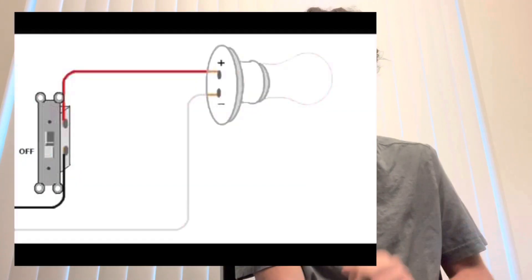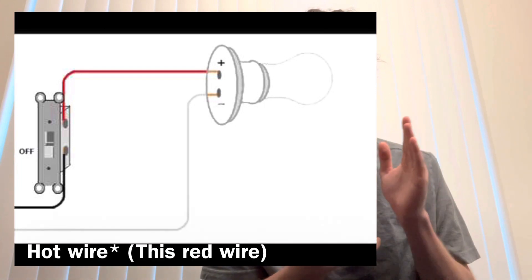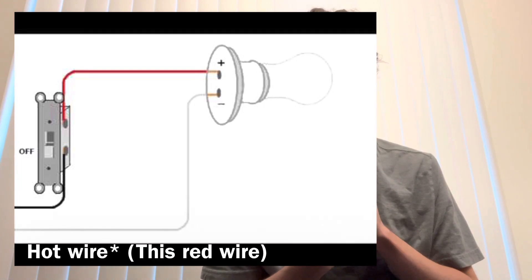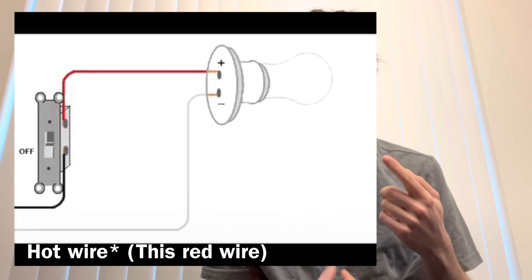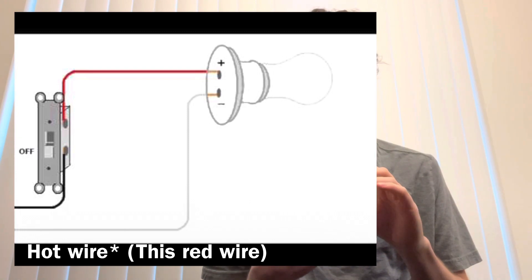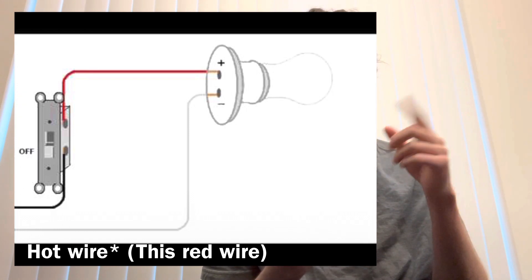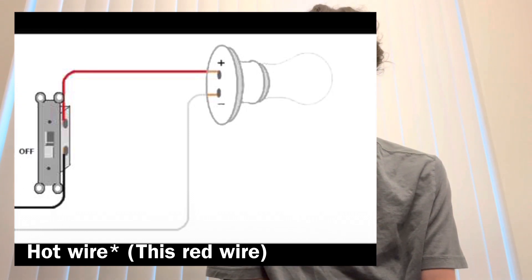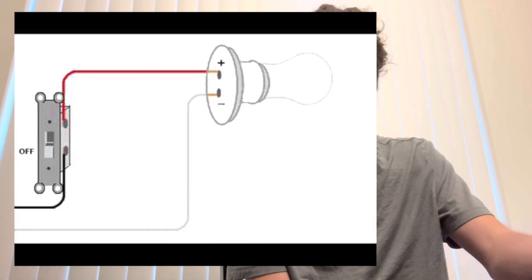Then we have the switch leg, which is just a piece of Romex going up to a certain object. A switch leg is usually referred to in a lighting application — you have your switch box and then a Romex wire going up to the light, and that wire is identified as the switch leg to turn on the light.